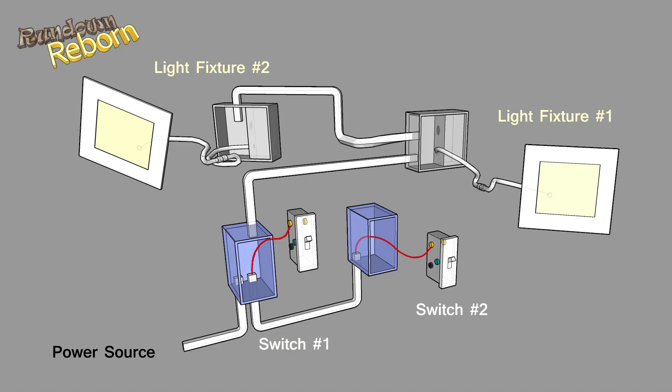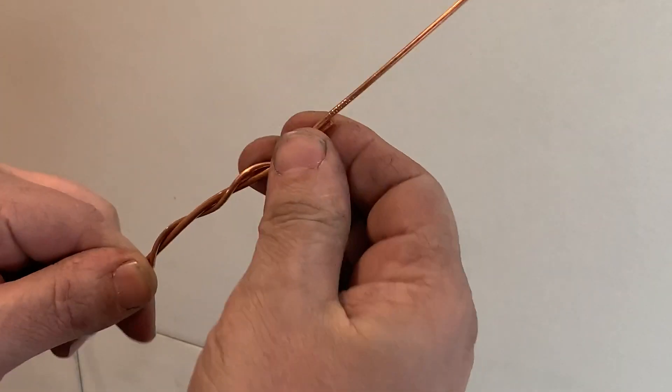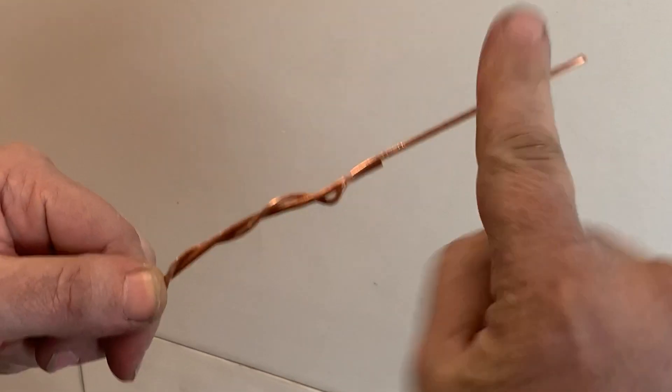Now that the common wires are in place, the next step is to connect all the ground wires. The terminal screws to connect ground wires to are usually green in color. The ground wires are the bare wires that have no insulation on them.